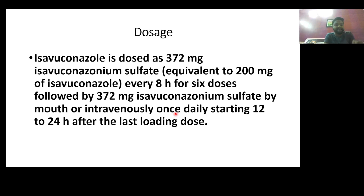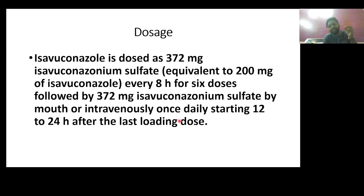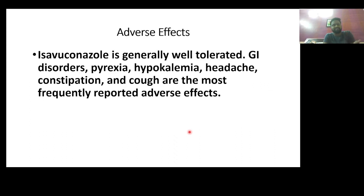Isavuconazole is dosed as 372 mg Isavuconazole sulfate, which is equivalent to 200 mg of Isavuconazole, given every 8 hours for the first 6 doses, followed by 372 mg of Isavuconazole sulfate by mouth or intravenously once daily, starting 12 to 24 hours after the last loading dose.